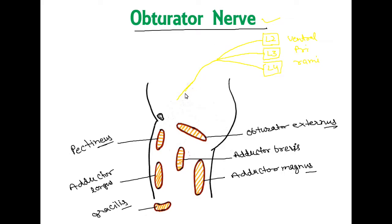The nerve divides into the anterior and posterior division. The anterior division passes anterior to the obturator externus muscle, and behind the pectineus. It also passes behind the adductor longus and anterior to the adductor brevis.